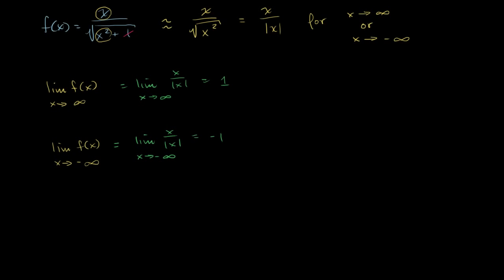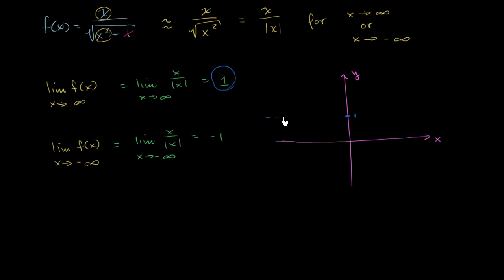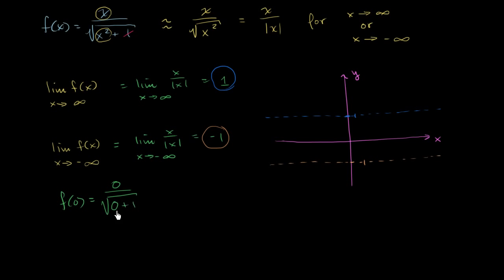Using this, we can try to graph our function. So let's say that is my y-axis, this is my x-axis. We see that we have two horizontal asymptotes: one at y equals 1 — let me draw that as a dotted line, we're going to approach this — and another horizontal asymptote at y equals negative 1. If we want to plot at least one point, f of 0 equals 0 over the square root of 0 squared plus 1, which is just 0.